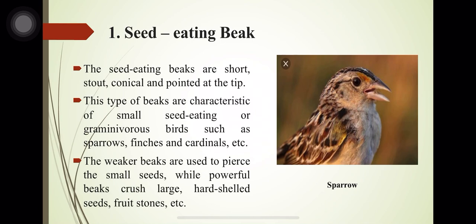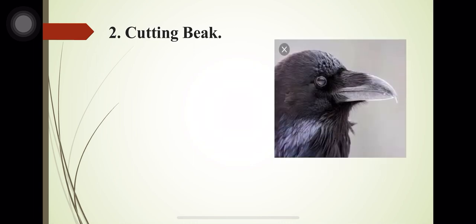The weaker beaks are used to pierce small seeds, while the more powerful beak is used to crush large hard-shelled seeds. These powerful beaks can also be used to cut seeds and fruit stones.